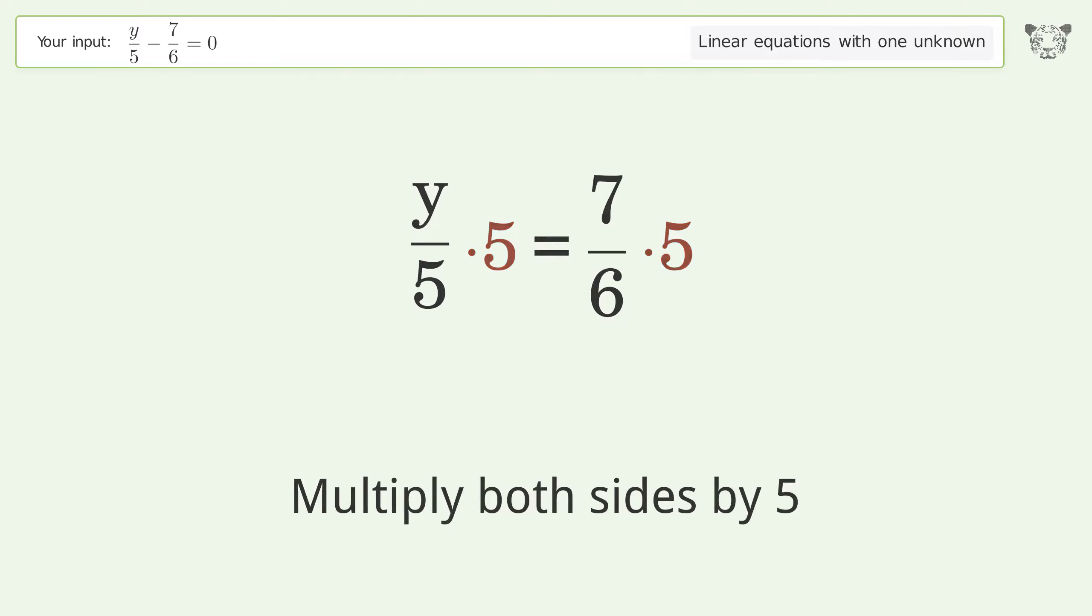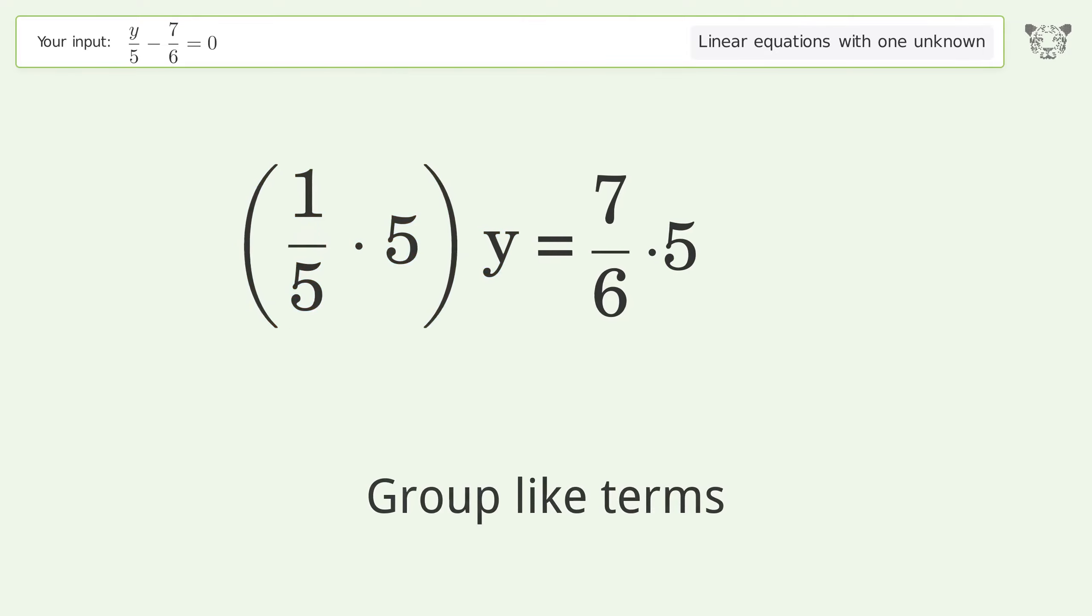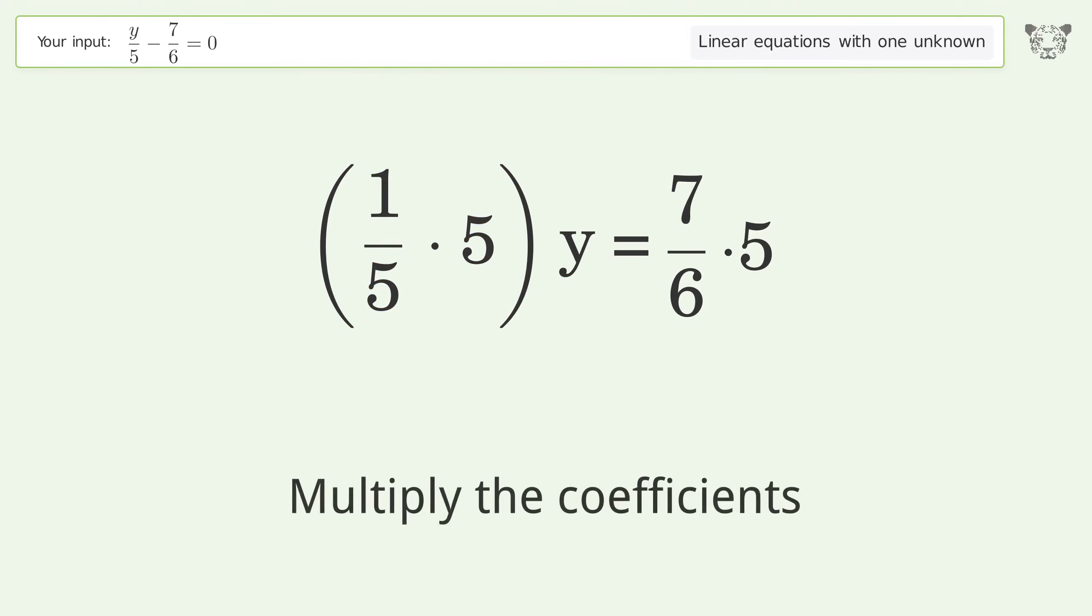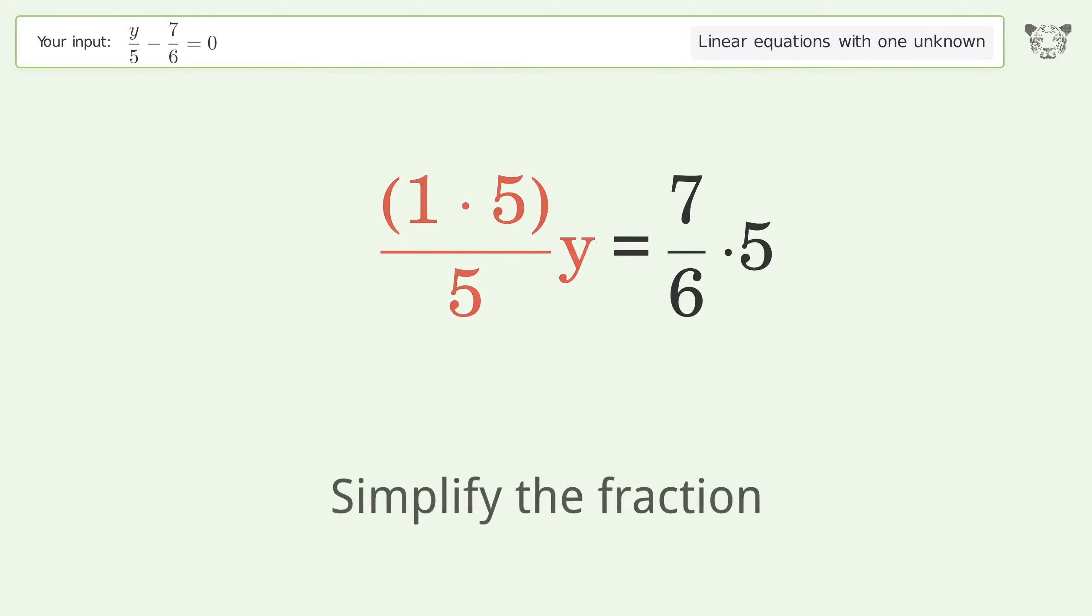Isolate the y. Multiply both sides by 5. Group like terms. Multiply the coefficients.